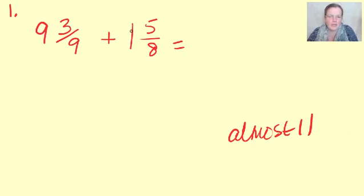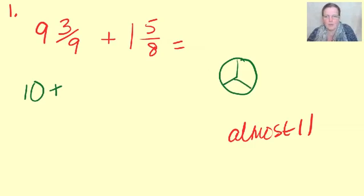Well, nine and one is ten plus now this three ninths is a third. Let me just show you. If I cut those into thirds and then if I cut each one of those one, two, three, one, two, three, one, two, three. So, one, two, three, four, five, six, seven, eight, nine.